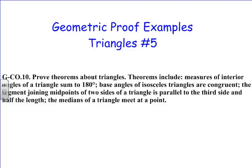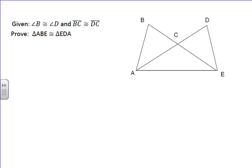So, this is our fifth example of geometric proofs involving triangles. And on this one, we're going to look at some overlapping triangles and how we can do proofs involving CPCTC and overlapping triangles.